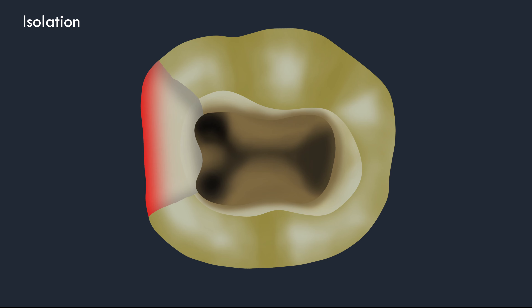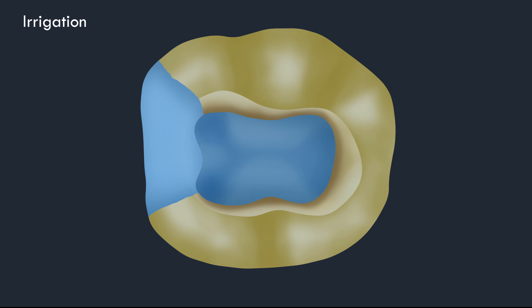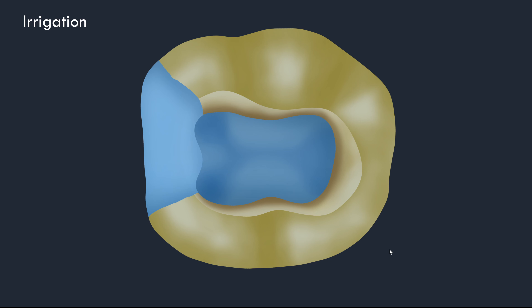If you try to apply a rubber dam in this situation, it will not be able to isolate the tooth completely. One of the basic requirements while doing root canal treatment is that the access cavity must be filled with root canal irrigant from initiation till the end of cleaning and shaping. But if one or more walls are missing, the irrigant will not stay inside the access cavity — it will seep out through the defect, making root canal irrigation and chemical disinfection incomplete.